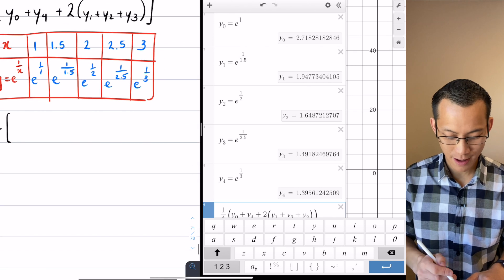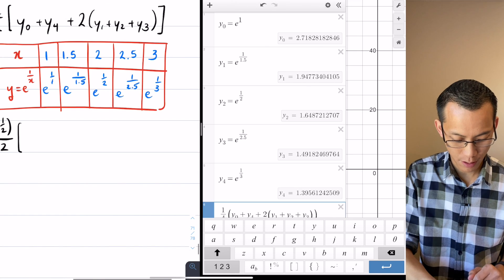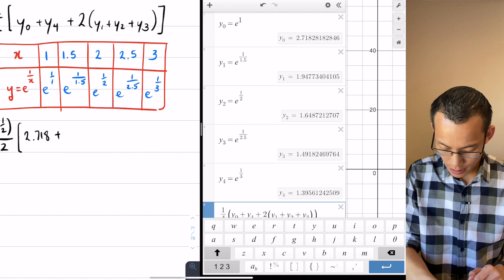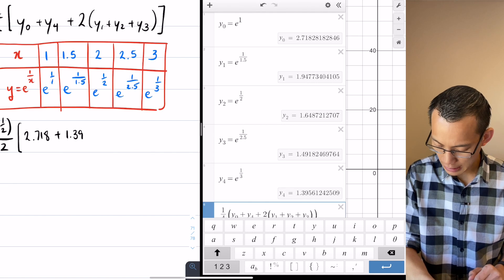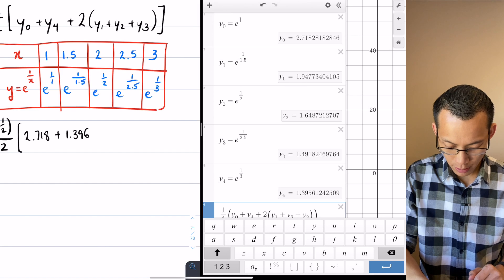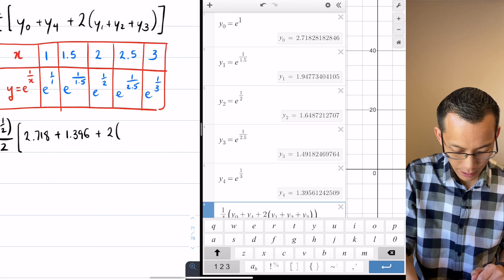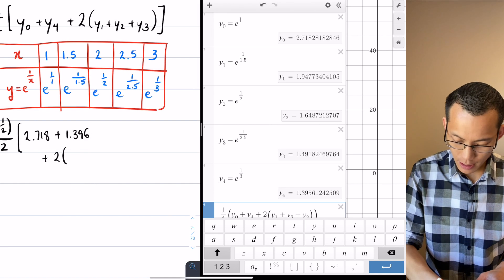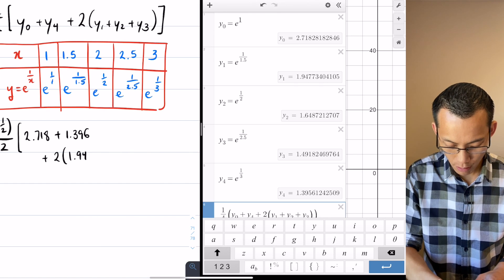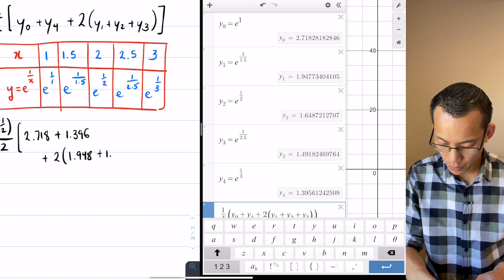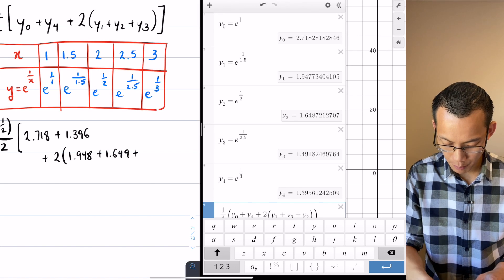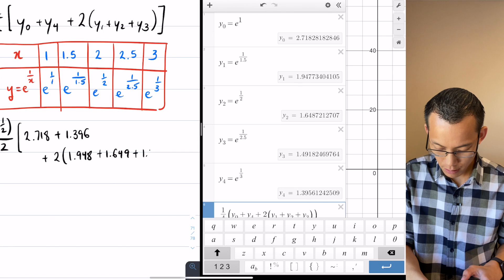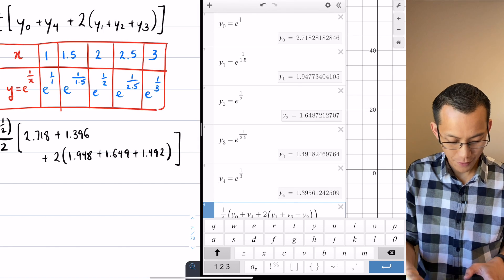So what I'm going to do is I'm going to take all of these values and substitute them into my line. So I've got e to the 1 is 2.718, e to the third is 1.396 looks like it's a six is what that's rounding to, plus two lots of y1, which is e to the power of 1 over 1.5, so that's 1.948. y2 is 1.649, plus the final one, which is actually the third one, it's 1.492.